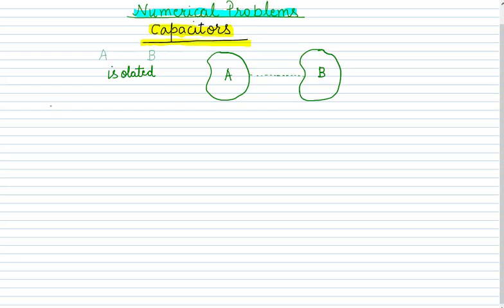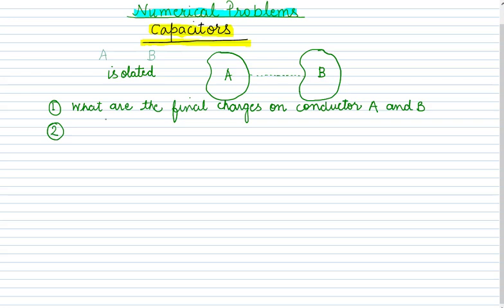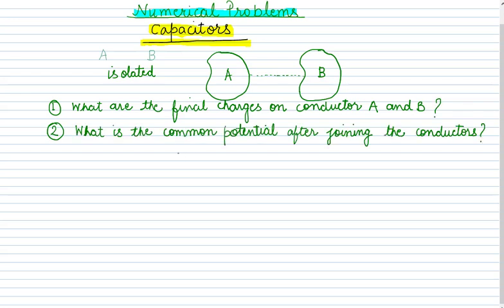The question asks: first, what are the final charges on conductors A and B? Second, what is the common potential after joining the conductors? Whenever conductors are joined, they will act as a capacitor because they are kept at some distance, and the conductors act as the plates of the capacitor.